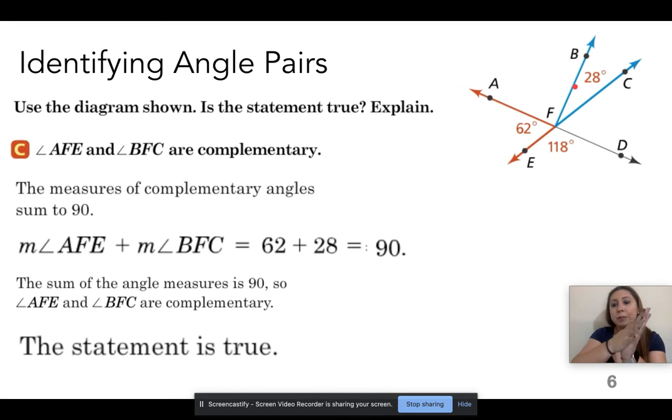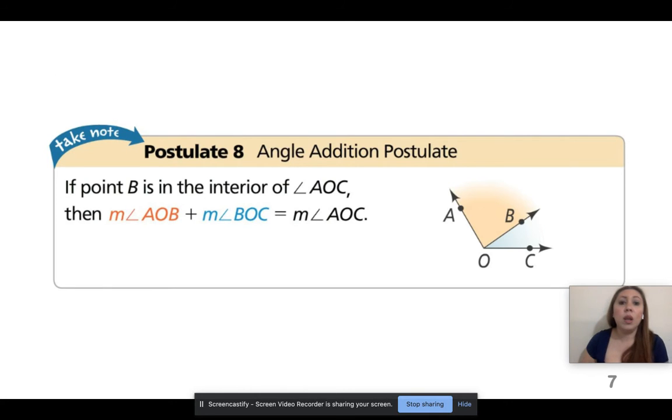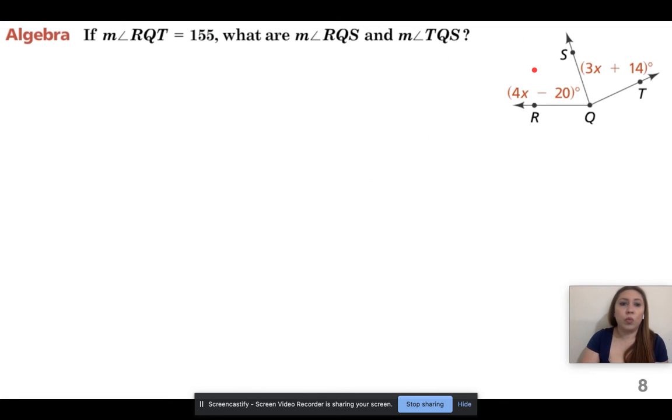So angle addition postulate. If point B is in the interior of AOC, then if I add the orange part plus the blue part, it should give me the whole thing, which is what we've already been covering the last couple of days anyways. So if I take one piece plus another piece, it should give me the whole piece together.